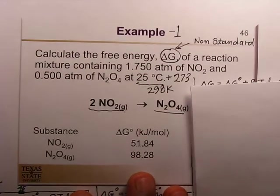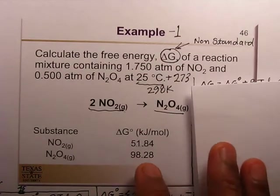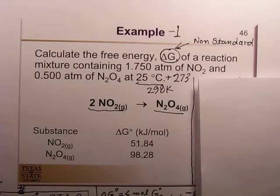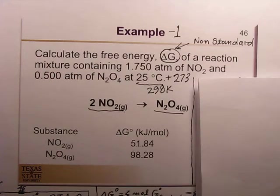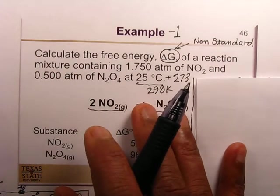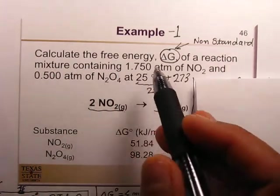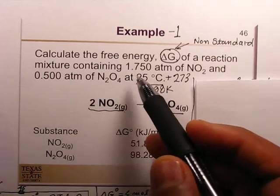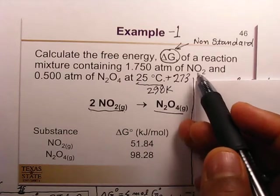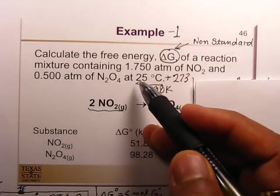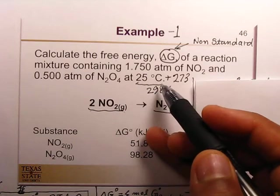In this video we will study three examples related to calculation for delta G and equilibrium constant. The first example: calculate the free energy delta G of a reaction mixture containing 1.75 atmosphere of NO₂ and 0.5 atmosphere of N₂O₄ at 25 degrees Celsius.